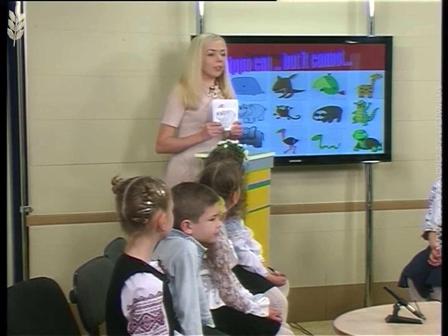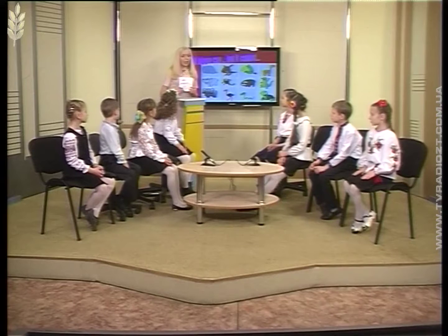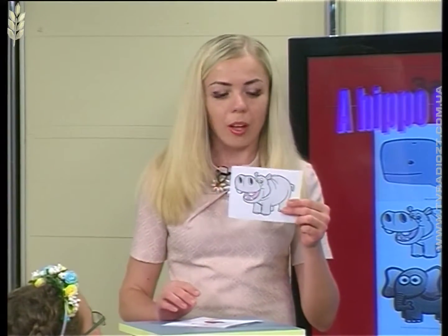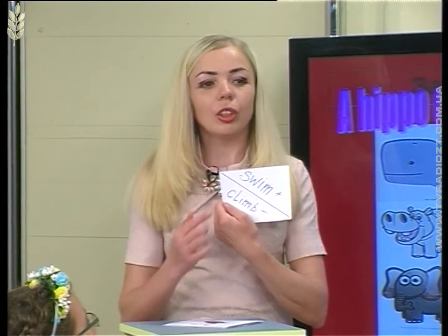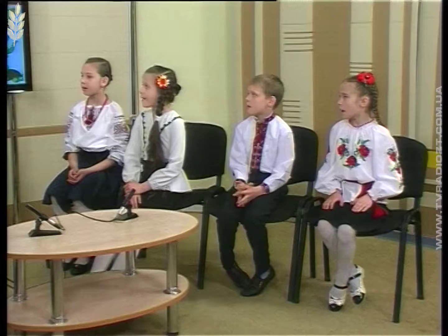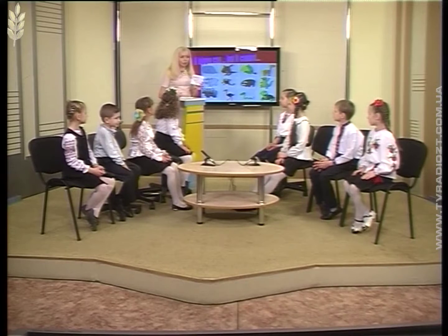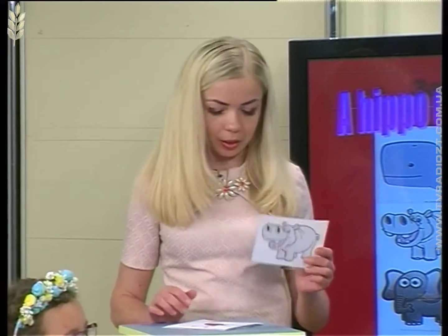And now I have animal action cards. Choose a card and say a sentence about what each animal can or cannot do. For example, I have the card of a hippo. A hippo can swim, but it cannot climb. All together: a hippo can swim, but it cannot climb. 'Cannot' means 'не може' in Ukrainian.